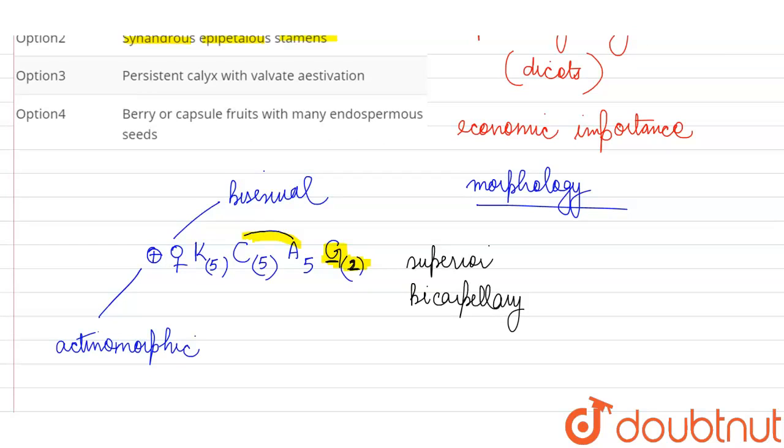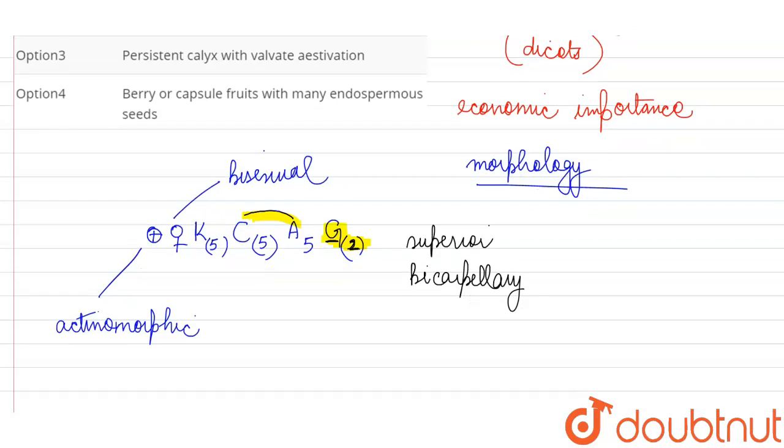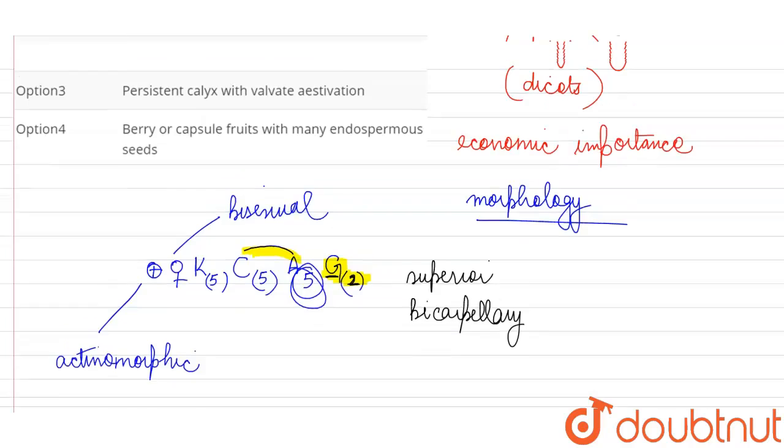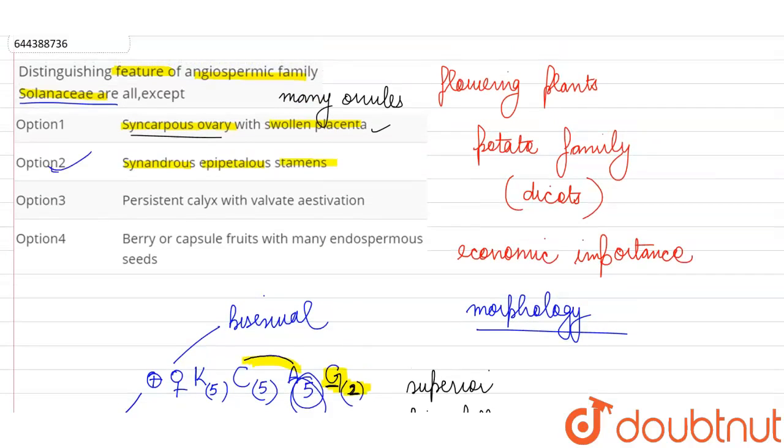But they are not synandrous, they are free, they're not fused with each other. Otherwise there would be a bracket over this five also, but since this is not the case, we cannot call them synandrous. Apart from this, all are correct.